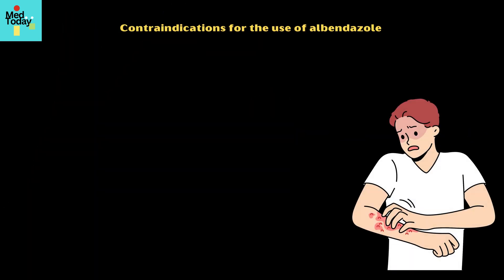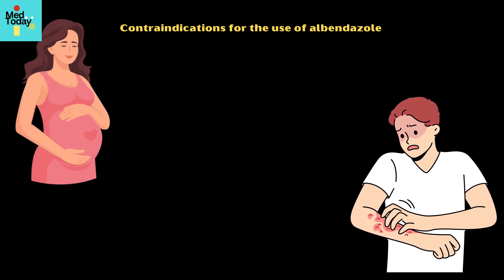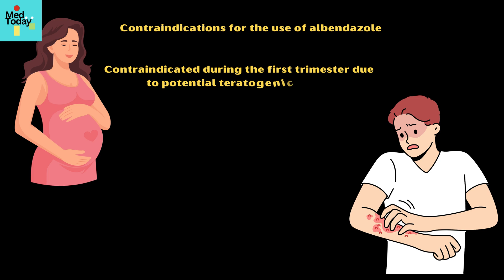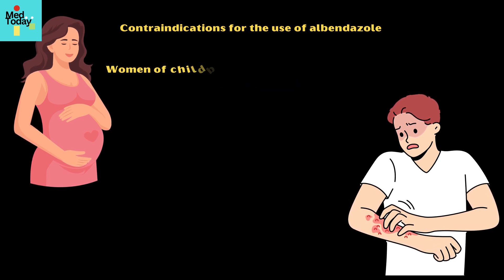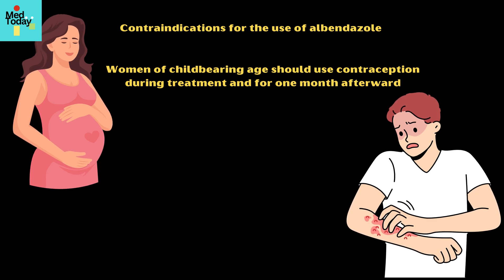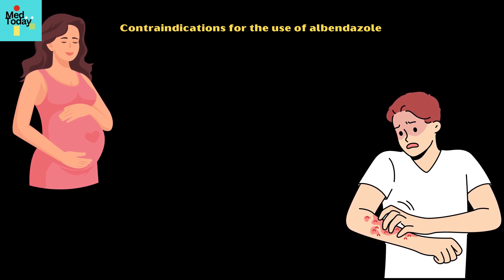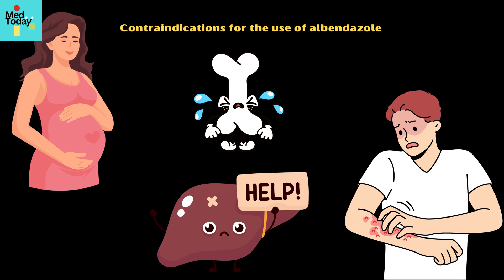Contraindications for the use of albendazole include the following: known allergy to albendazole or other benzimidazoles; pregnancy, as it is contraindicated during the first trimester due to potential teratogenic effects — women of childbearing age should use contraception during treatment and for one month afterward; and liver impairment and bone marrow suppression.